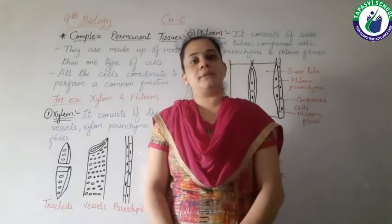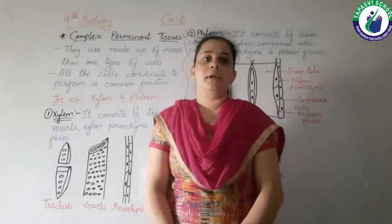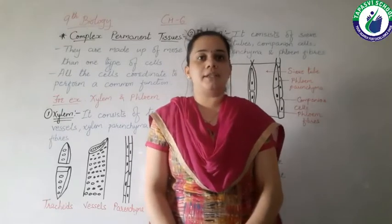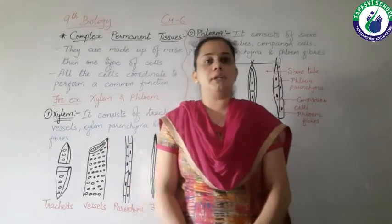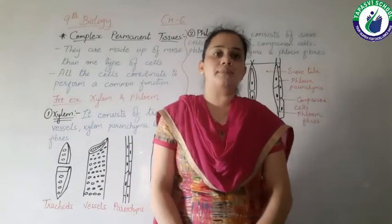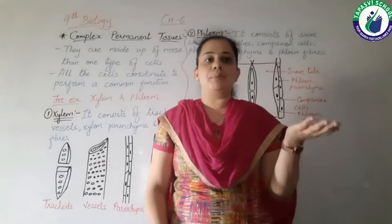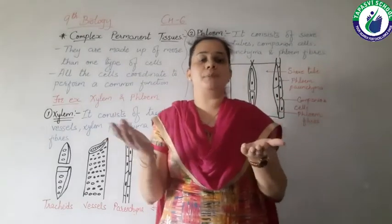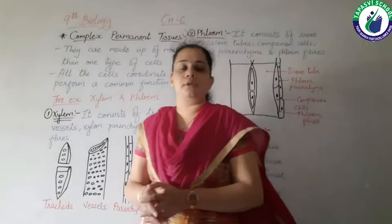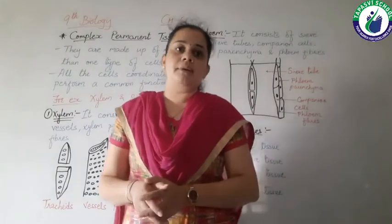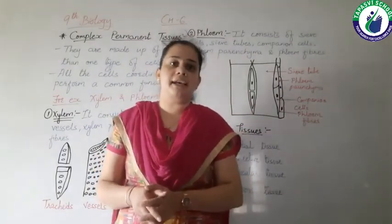In meristematic tissues there are three types: apical meristem, lateral meristem and intercalary meristem. In permanent tissues there are two types: simple permanent tissues and complex permanent tissues. Simple permanent tissues are parenchyma, colenchyma and sclerenchyma.